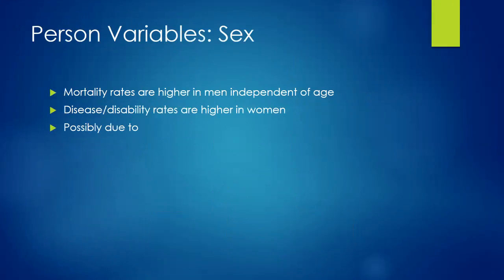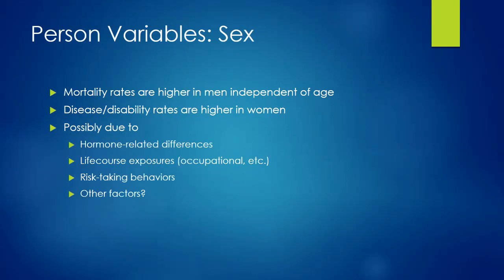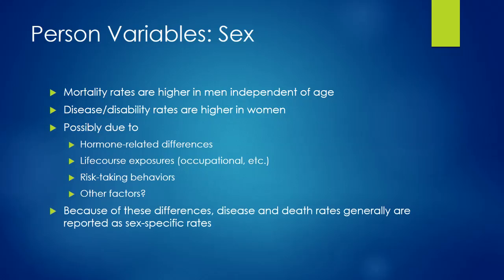Sex is another person variable we often consider. There are higher mortality rates among men regardless of age group, but rates of disease and disability are higher among women than men of the same age. This could relate to hormone differences, life course exposure differences such as occupational class, and differences in risk-taking behaviors, especially among adolescents where younger men tend to have higher thresholds for risk. Disease and death rates are often reported as both age-specific and sex-specific rates.